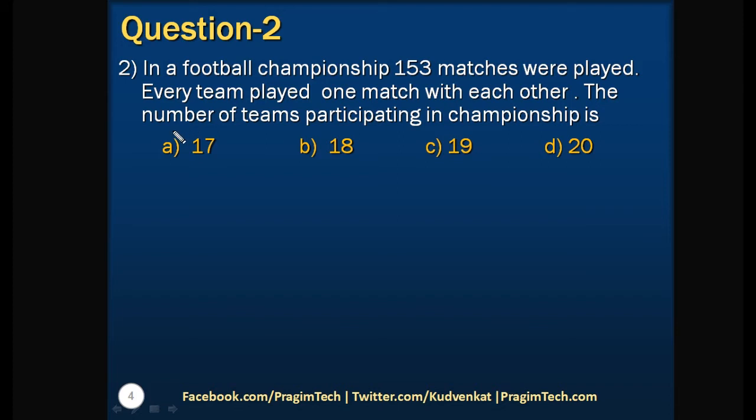In this question the number of matches are given. We have to find out how many teams participated so that number of matches are 153, and it's given that each team is playing with each other. That means to perform a match we need two teams. Let number of teams be N and each team plays with another team.